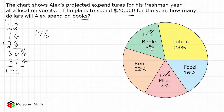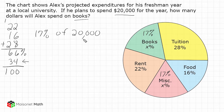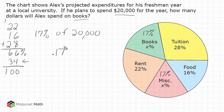What we have to do is figure out how many dollars he is spending on books. He is spending 17% of the $20,000 on books. Whenever finding the percentage of a total, we multiply that total by the percentage expressed as a decimal. So I'm going to take 17%, which is the same as 17 out of 100, written as 17 hundredths, and multiply it by 20,000.